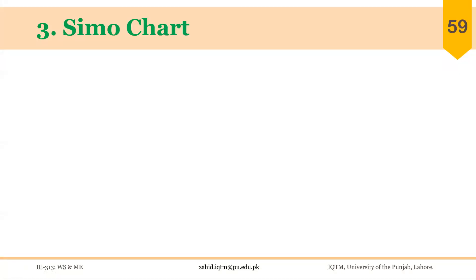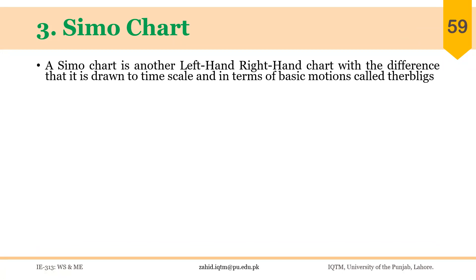The third chart that is drawn to timescale is the CIMO chart. CIMO means simultaneous motions — SI stands for simultaneous and MO stands for motions. It is not a new chart actually; this is basically a variant of the two-handed or left-hand right-hand chart, with the difference that it is drawn to timescale.